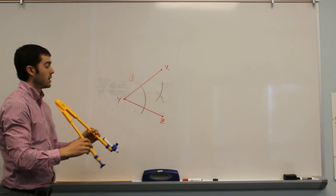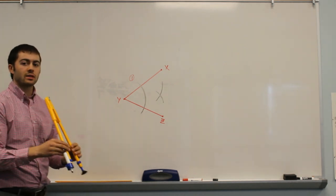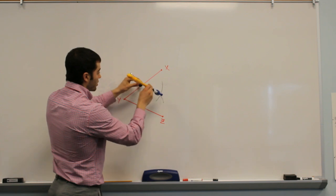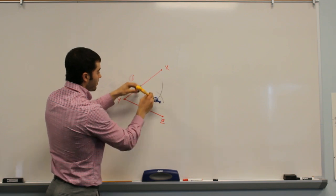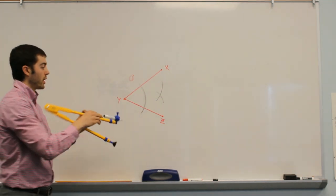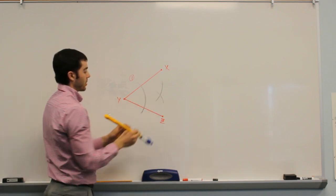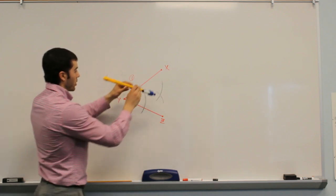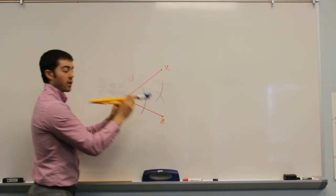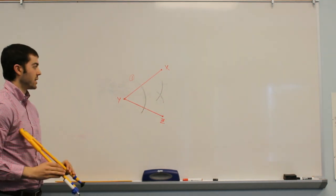A very important key here is that the compass width has to stay the same when you're swinging both of these arcs. So you made an arc here, you need to keep the compass the same width when you go to make your arc from the other line segment. When we swung this arc and this arc, the compass width stayed the same the whole time.